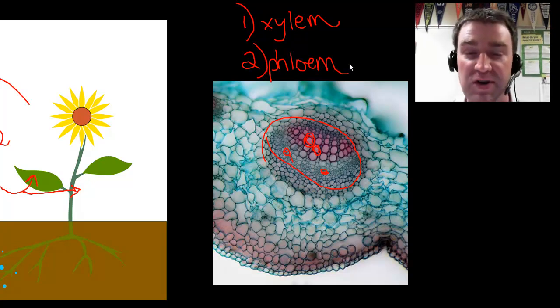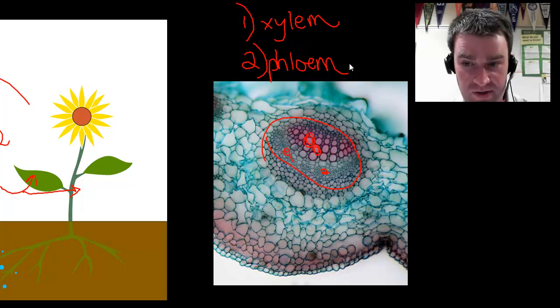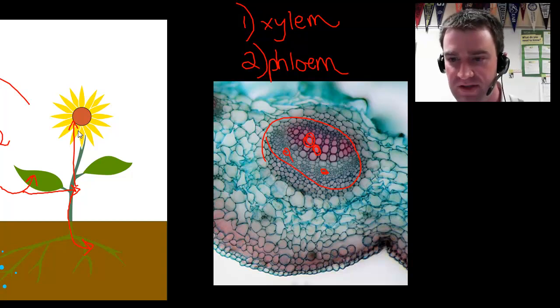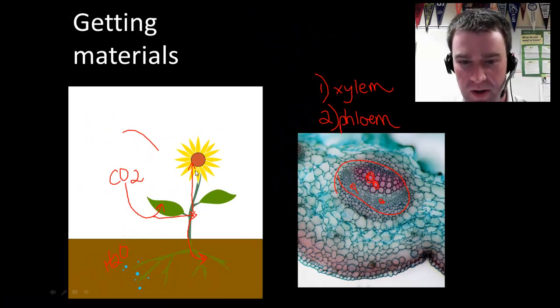The phloem tubes are going to carry the sugar that's produced in photosynthesis from the photosynthetic centers all around the plant. Remember that there's going to be plenty of plant cells that are below ground here that are going to need access to that sugar in order to keep themselves alive. So they've got to send the sugar down to them. But there might even be some sugar sent up the plant as well as we'll discuss later.